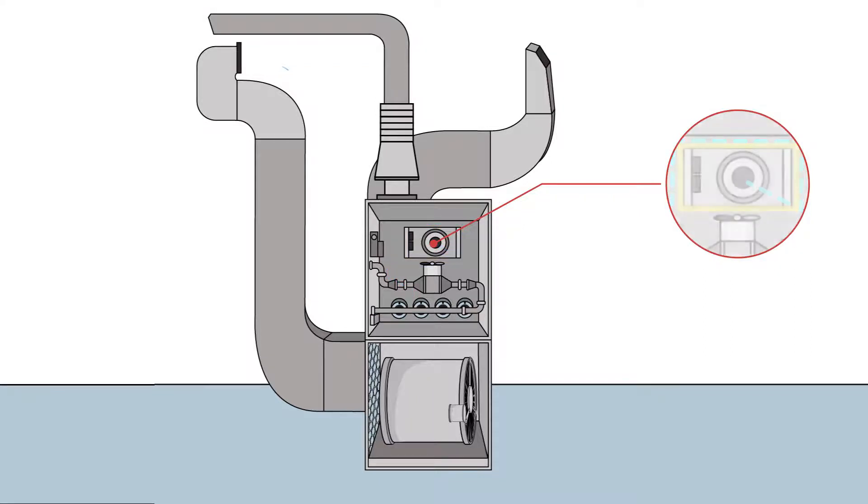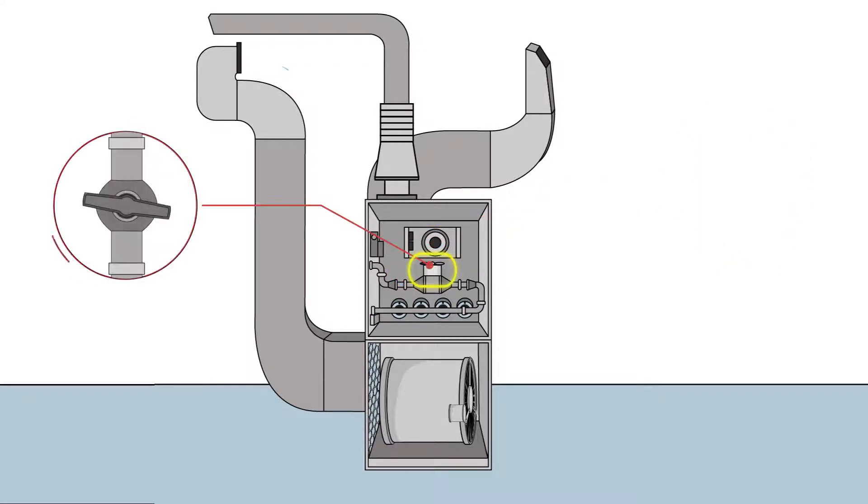The flame igniter starts. After a short delay, the gas valve opens to allow gas to the burners and ignition occurs, starting the combustion process.